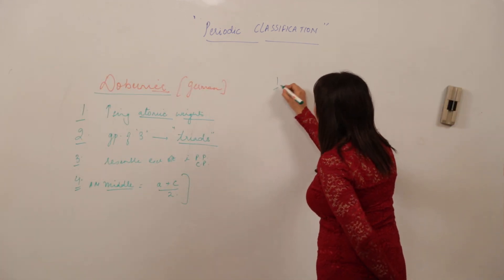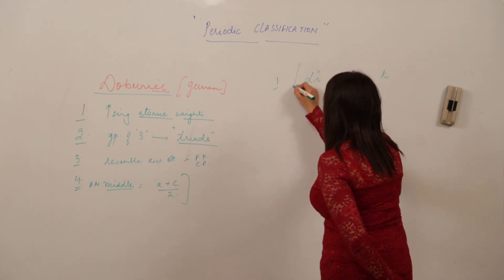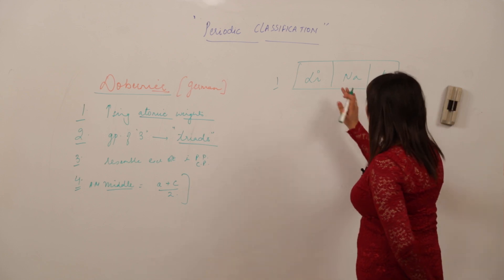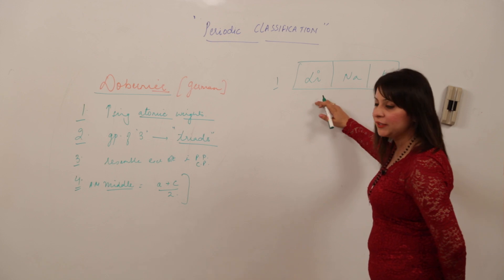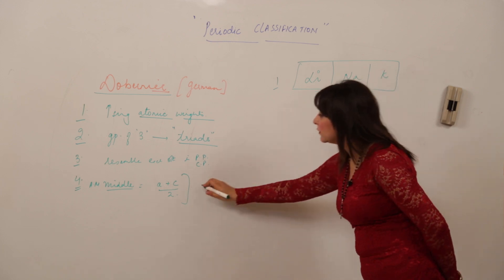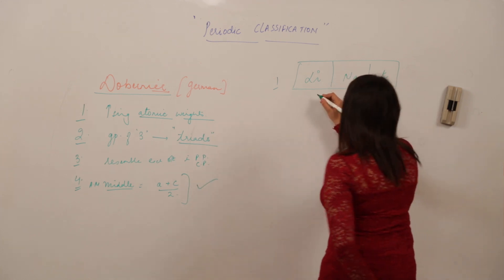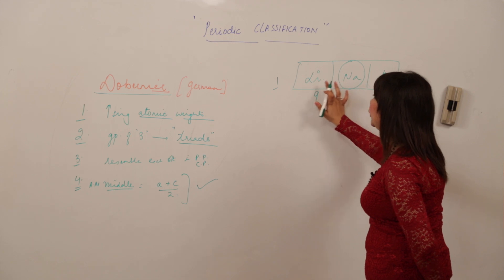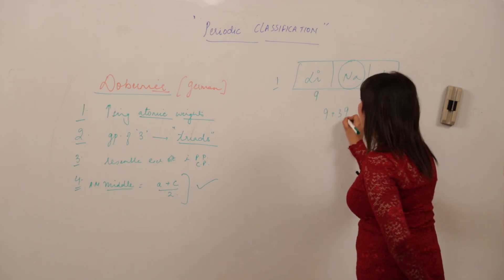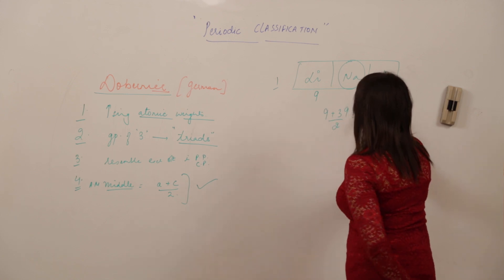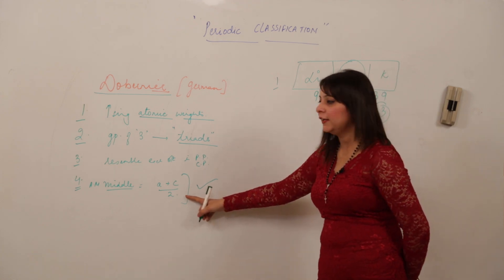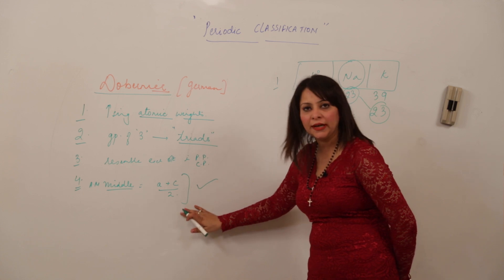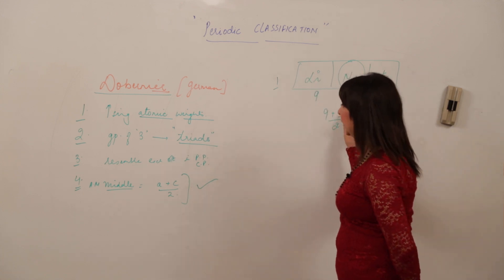The first triad he made was lithium, sodium, and potassium. Taking the fourth criterion: the atomic mass of lithium is 7 and of potassium is 39, so the arithmetic mean is (7 + 39) / 2 = 23, which is the atomic mass of sodium. So the atomic mass of the middle element is indeed the arithmetic mean of the first and third elements.